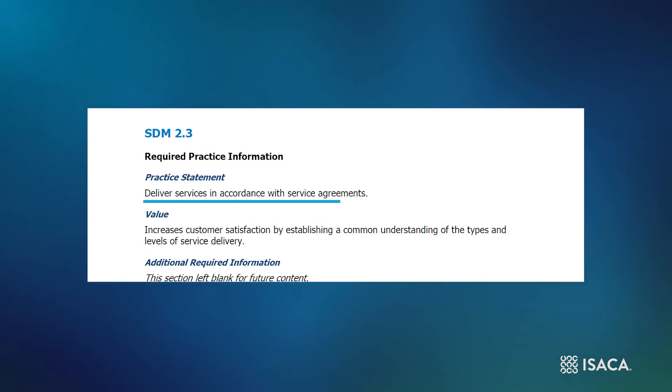SDM 2.3 builds on the previous practice. It is not sufficient to log and process service requests — the services being requested need to be delivered once requested. Again, the service agreement plays a crucial role here as it will outline the steps that a request will go through from its initial submission to the point at which it can be closed because the service has been provided in accordance with the service agreement. Information relating to the delivery of service is captured not just at the point of request but throughout the service delivery lifecycle, which can be extremely helpful in tuning the service system and adjusting it to ensure that it is delivering in accordance with the service agreement.